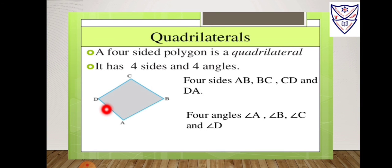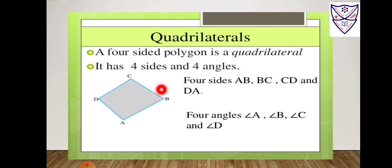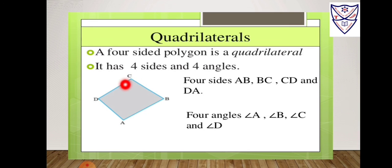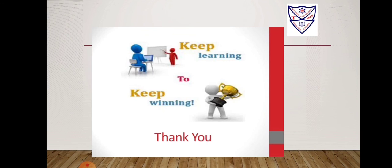Now, what are vertices? The point where two sides of a polygon meet is called its vertex, and the plural is known as vertices. For example, here we have vertex A, vertex B, vertex C, and vertex D. So these are known as vertices.